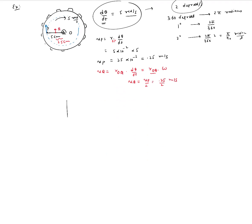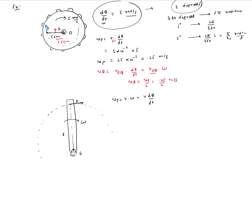Going back to our beam rotating about point O with point P at distance R: we've seen that if rotating clockwise with angular speed ω, the velocity of P is tangent to the circular path, equal to R × ω. The acceleration of point P actually has two components. While velocity is only along the tangential direction, acceleration has one component along the tangential direction — I'll call it A_T — and another perpendicular to it pointing towards the center of rotation, called the normal direction acceleration A_N.